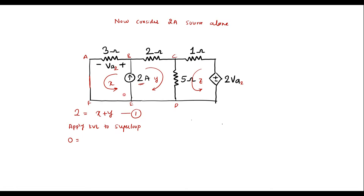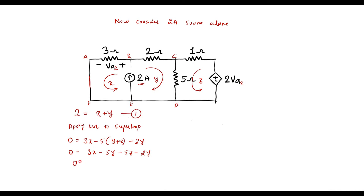Starting from the 3 ohm resistor: 0 equals 3X. Moving in the direction of current through the 5 ohm resistor, since Y and Z are opposite, we write minus 5(Y plus Z). The 2 ohm resistor has Y opposing, giving minus 2Y. Simplifying: 0 equals 3X minus 7Y minus 5Z. Let this be equation 2.